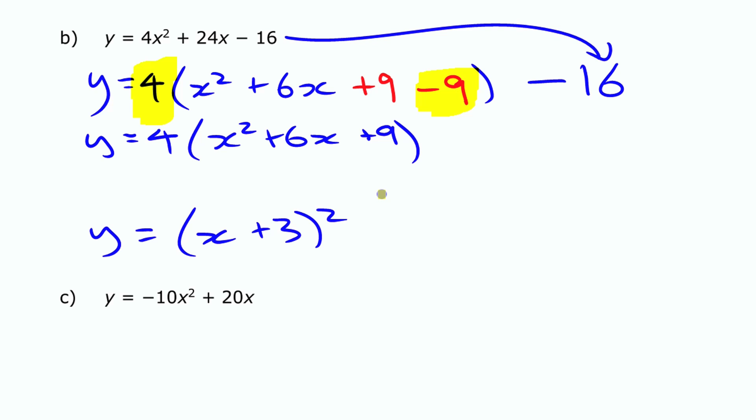So what I need to have outside of the brackets here is 4 times that minus 9, or minus 36. All right, that's a key thing to realize. You have to account for that number that's in front.